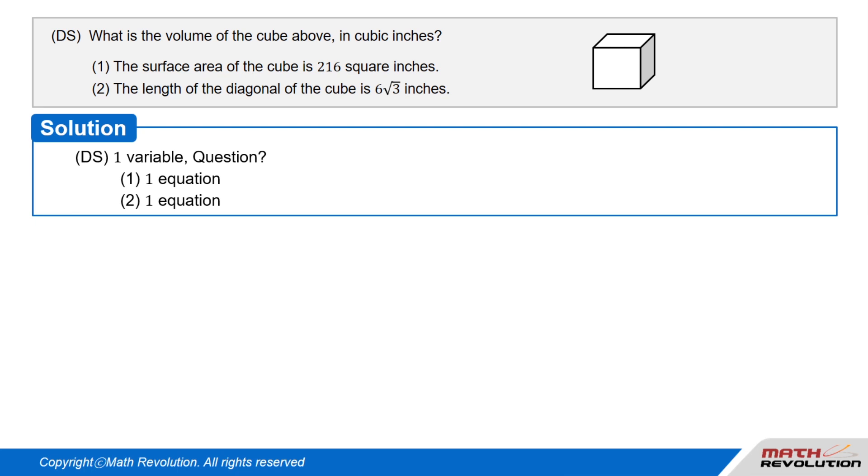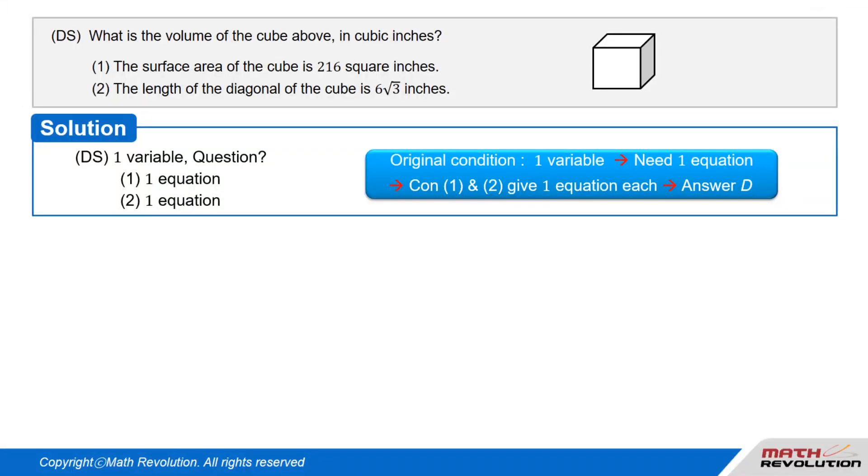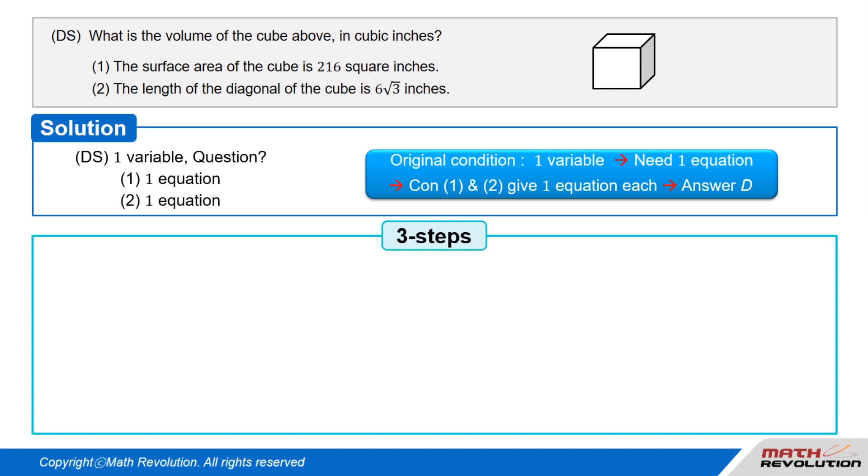DS question with one variable. Let's look at a DS question with one variable in the original condition. Now, one variable would generally require one equation to find the value of the variable. We are aware that each condition should give us an equation, and each equation should be able to give us the value of the variable. So, each condition should be sufficient independently, and we should logically get an answer D. Let's apply the three steps suggested previously.